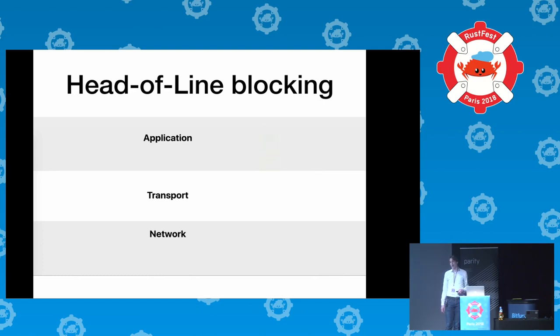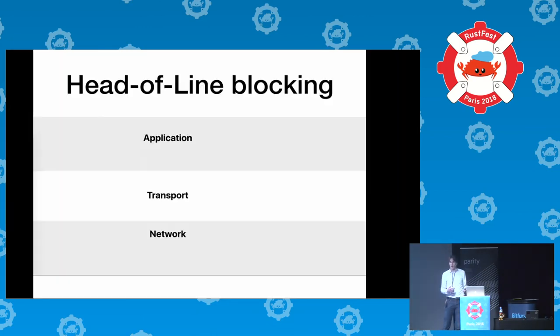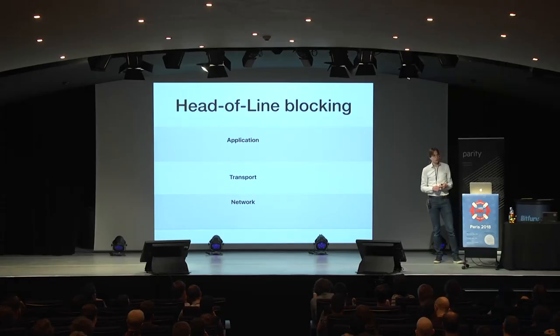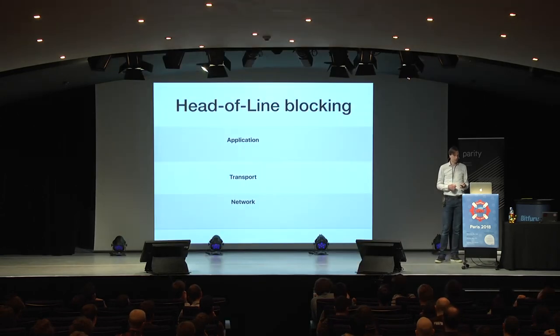In many cases in practice, what you're delivering over the transport layer is not just one stream of bytes but multiple streams of bytes interleaved — so you're doing multiplexing. In that case, it might be nice to take the parts not directly affected by the packet loss and be able to deliver them to the application layer before retransmission is fixed.